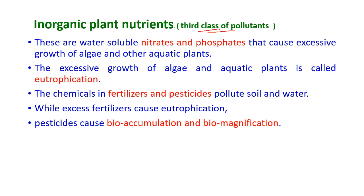The third class of pollutants are inorganic plant nutrients — water-soluble nitrates and phosphates that cause excessive growth of algae and other aquatic plants, known as eutrophication. Chemicals in fertilizers and pesticides pollute the soil and water: excess fertilizers cause eutrophication, while pesticides cause bioaccumulation and biomagnification.